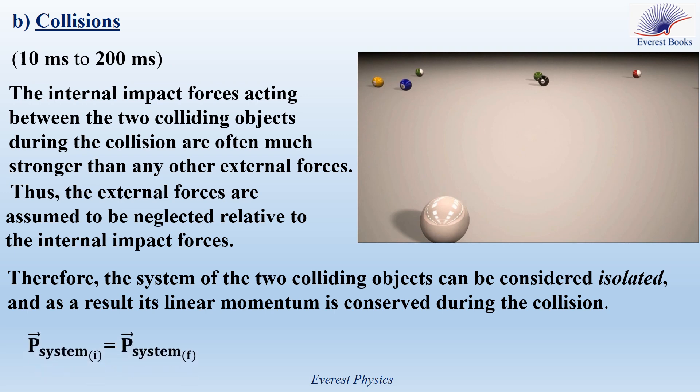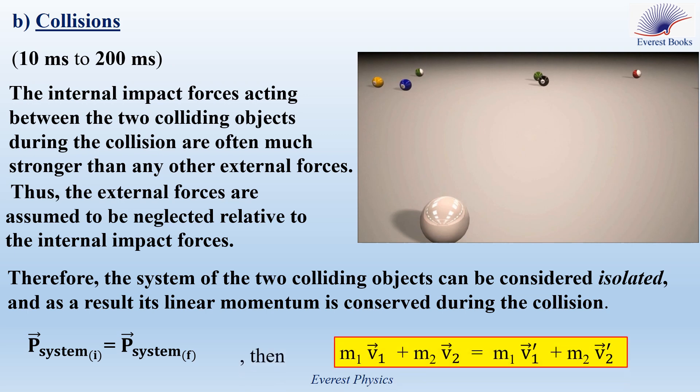So we have P-system initial equal to P-system final. This is going to be M1·V1 plus M2·V2 — the linear momentum before the collision — equal to M1·V1' plus M2·V2' — the linear momentum after the collision.